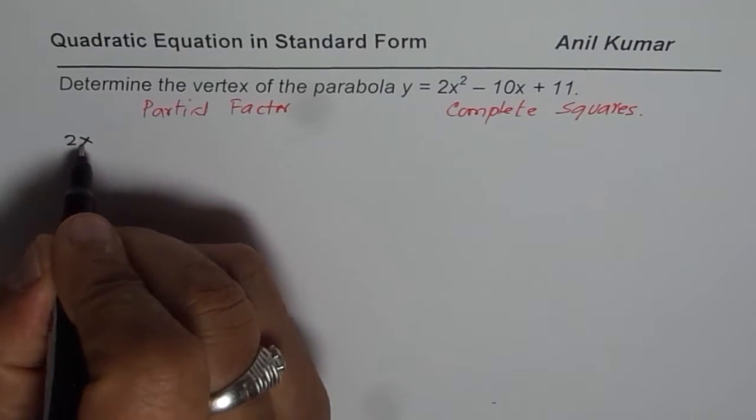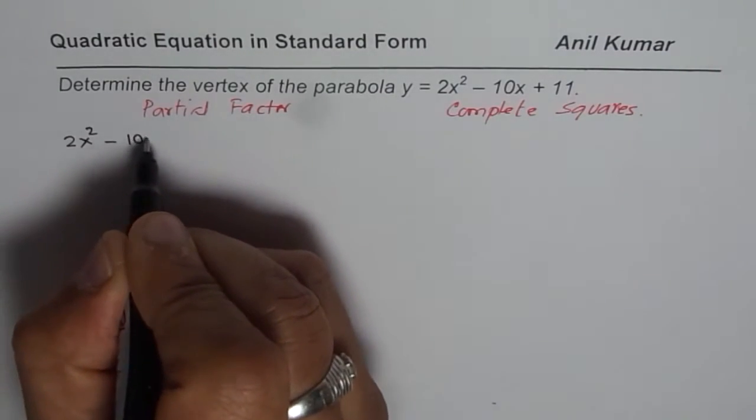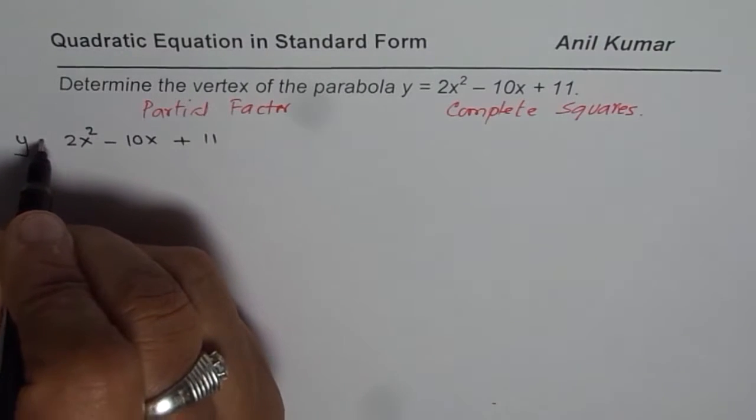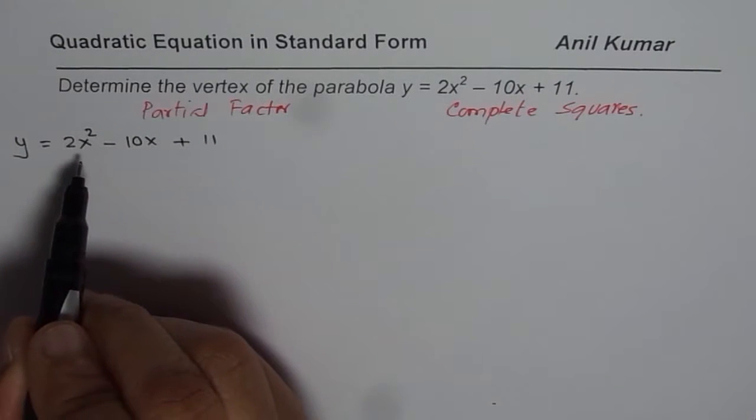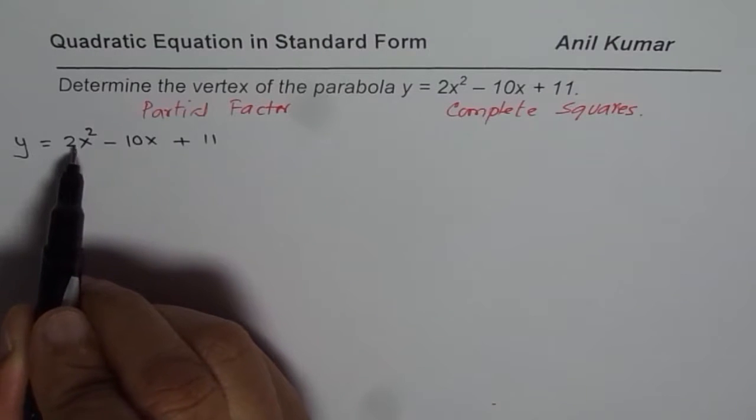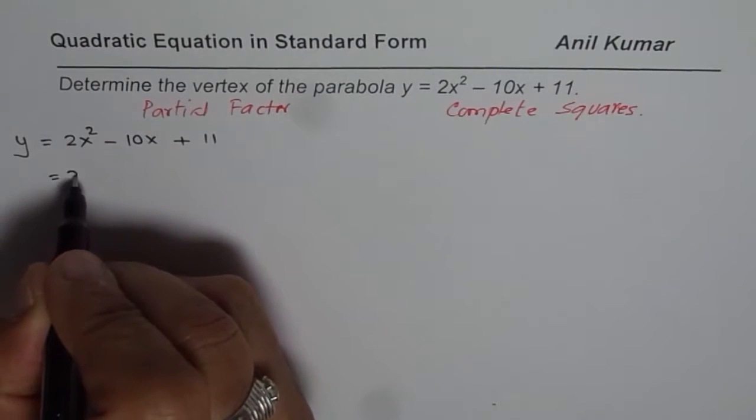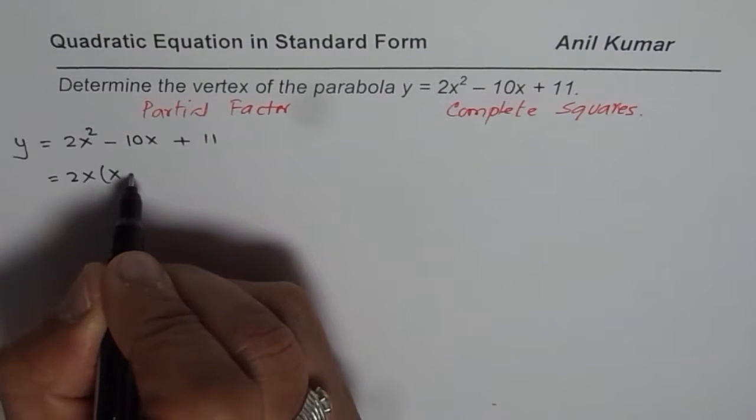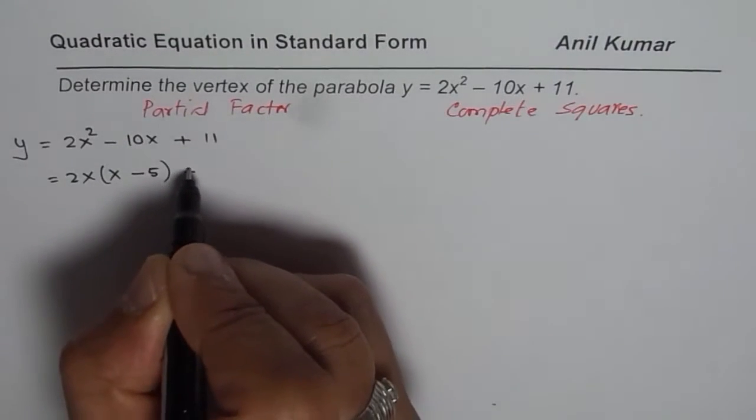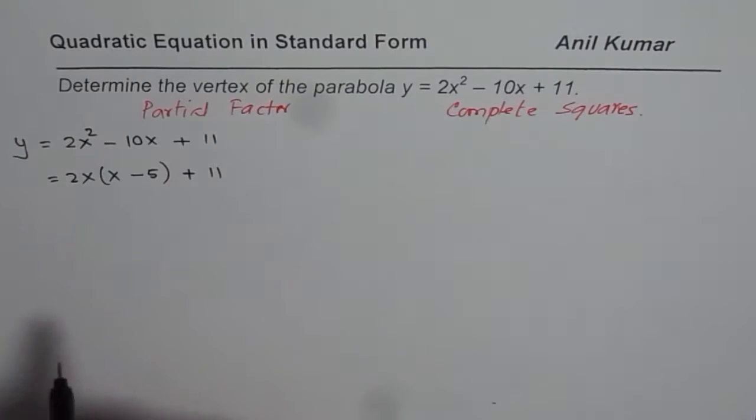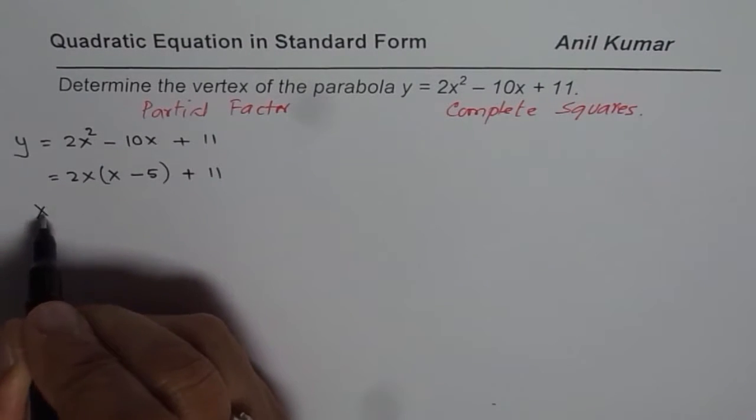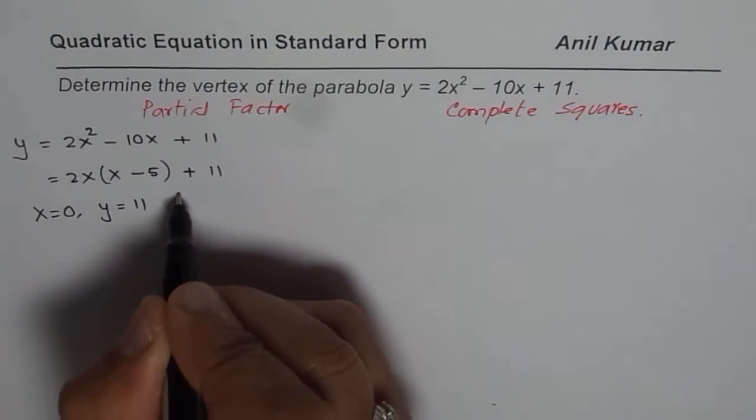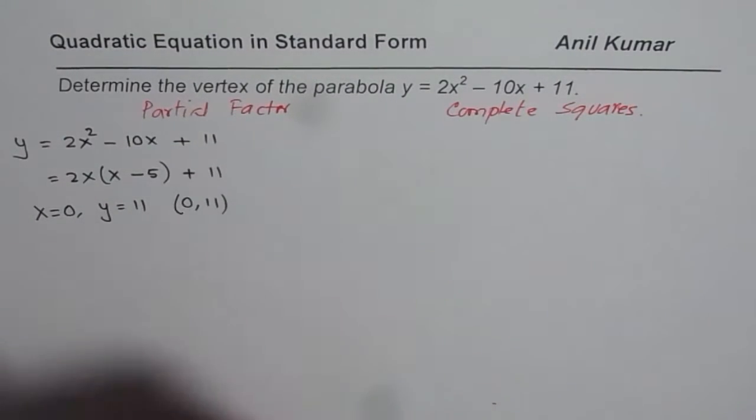The equation given to us is 2x squared minus 10x plus 11, that is y equals this value. So here we can factor out these. 2x is common, so I can write this as 2x times x minus 5 plus 11. Now you will notice that if x equals 0, y equals 11.